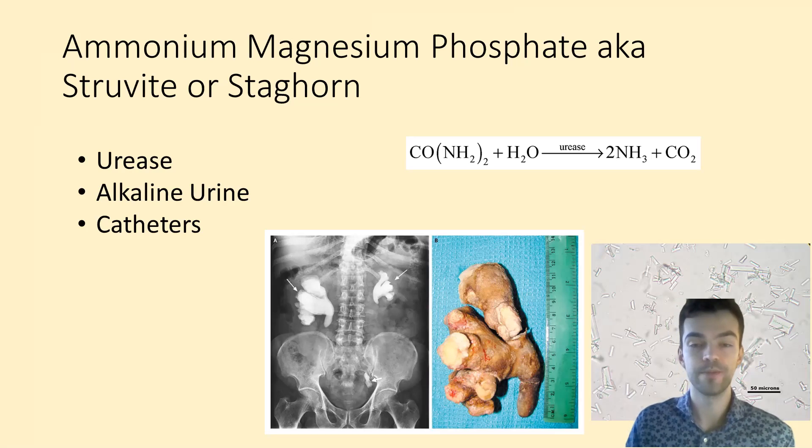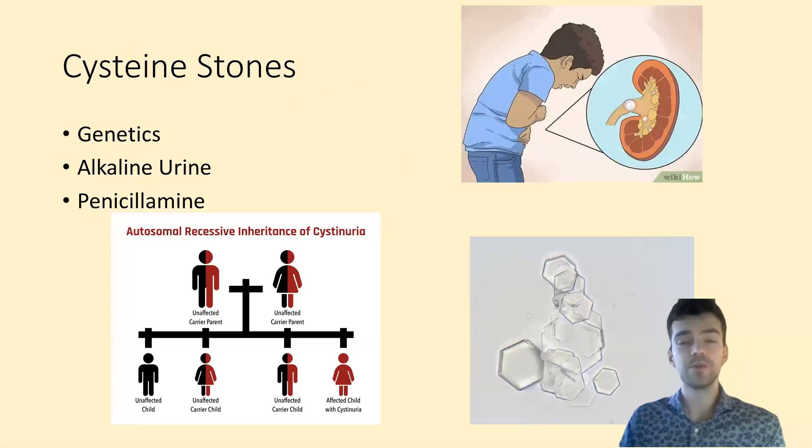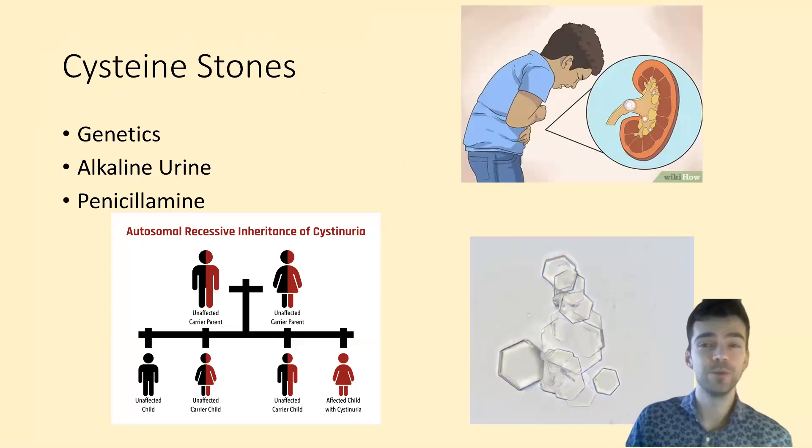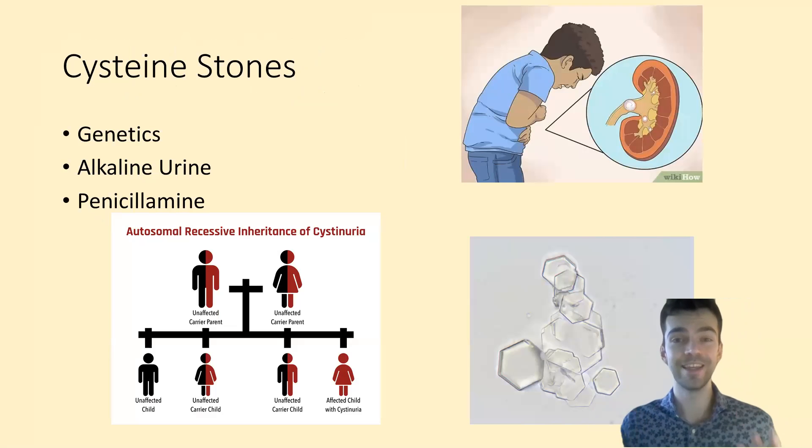Cysteine stones are really the stones of childhood. In any child with a kidney stone, you have to suspect this type. It's a genetic disorder where cysteine does not get reabsorbed in the kidney tubule, so it stays there. Cysteine loves to precipitate in the kidney tubule and forms these hexagonal-like structures, which we can see on the bottom right. This is an autosomal recessive disease, meaning both parents have to be carriers to have a child with the disease.